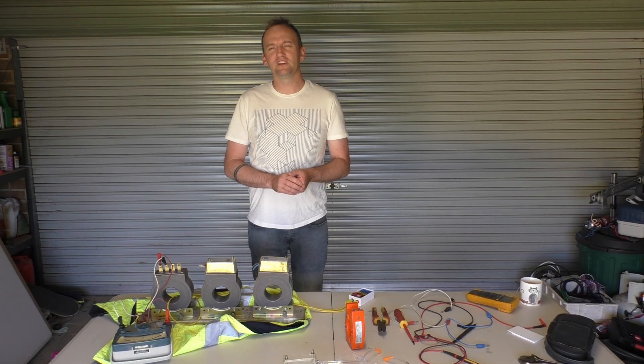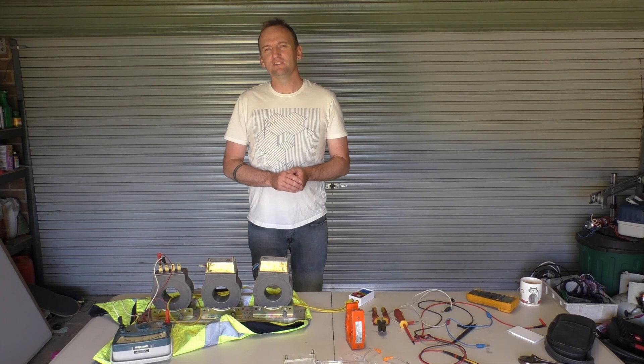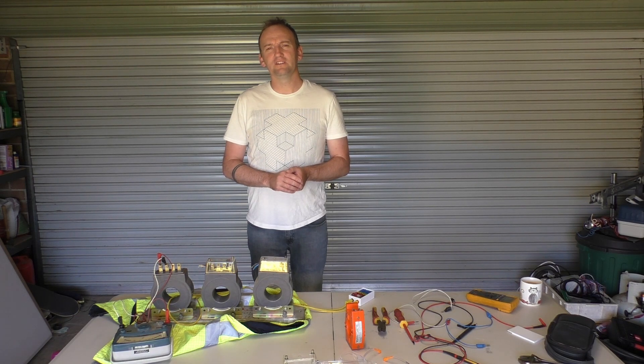This is a quick demonstration of how you do a flick test on a current transformer to work out its polarity using an analogue meter and a DC battery.